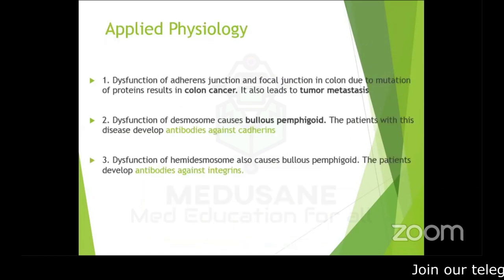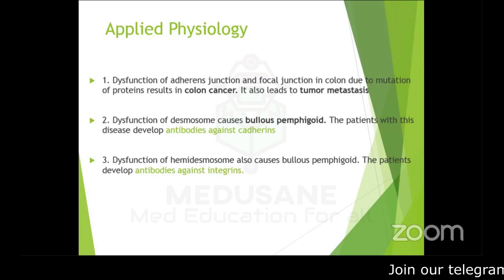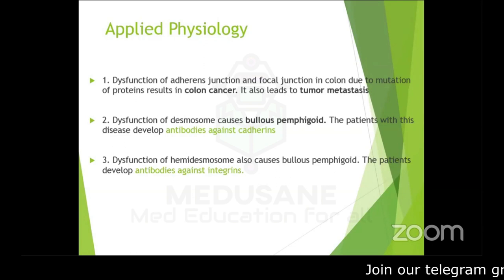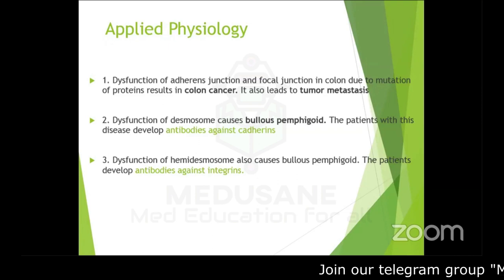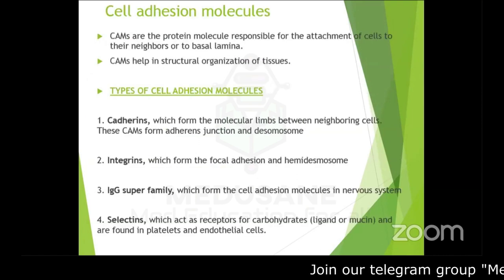Applied aspects: any dysfunction of adherens junctions and focal adhesions results in colon cancer and is also a reason for tumor metastasis. Dysfunction of desmosomes leads to bullous pemphigoid — an autoimmune disease causing blistering on the skin. Patients develop antibodies against cadherins. Dysfunction of hemidesmosomes also causes bullous pemphigoid, where antibodies are directed against integrins.